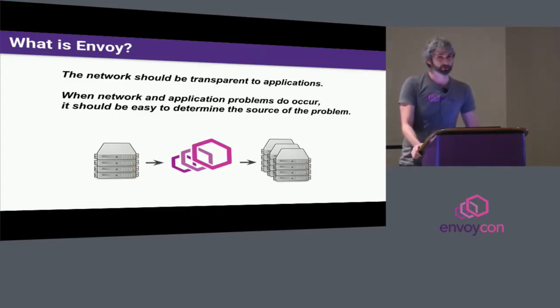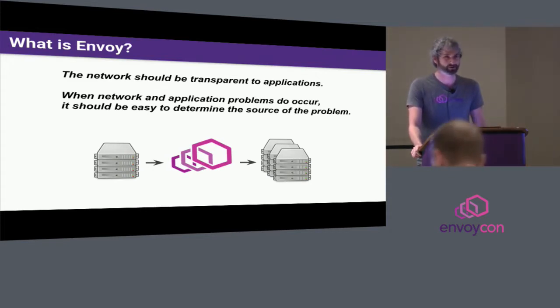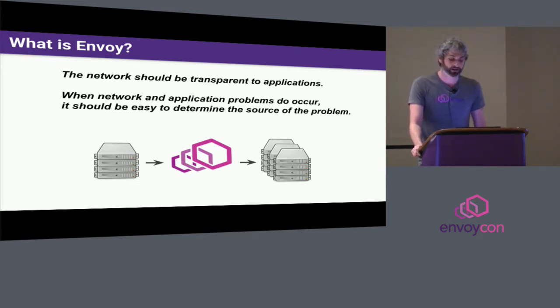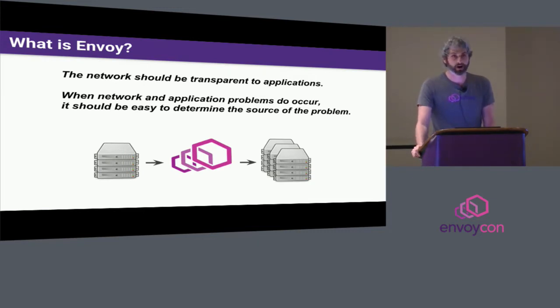I hope that most people here know what Envoy is, but just on the off chance that you don't, and to set some expectations for the rest of the day, I'll spend 30 or 60 seconds talking about the Envoy project. Fundamentally, Envoy is a network proxy. The goal of Envoy is that the network should be transparent to applications. We develop infrastructure, but our goal as infrastructure engineers is to get out of the way and allow people to focus on their business logic. Envoy allows an abstraction that lets higher layer systems be built that can make the network transparent to end users.